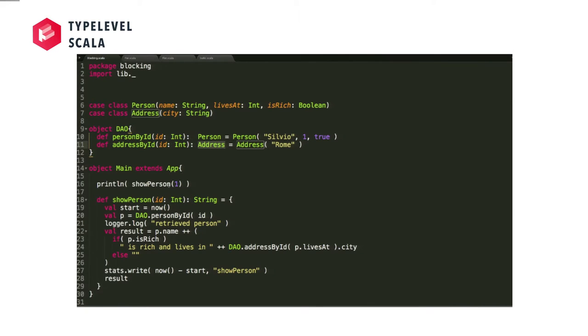So, println show person1. So, it gets some timing. So, it first gets the time now. And then, it does a database call to get the person in a blocking way. It calls the logger to say, hey, I did something. Then, it produces or it computes a value result, which is the name of that person. And, appended is a string if the person is rich. Then, we print is rich and lives in. And then, we fetch the address from the database. And, finally, we're done. And we say, oh, is stats.write? Like, let's record how long it took and return the result.